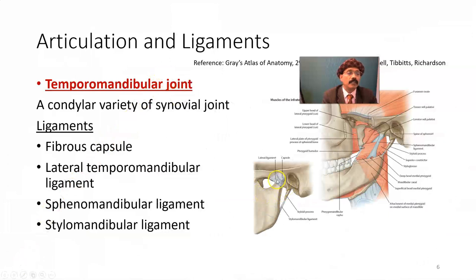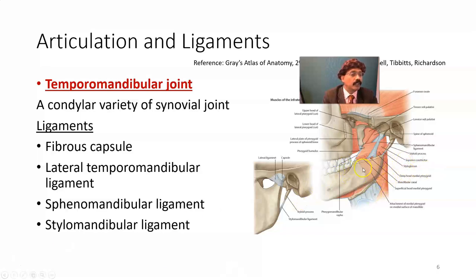Regarding ligaments, we have the lateral ligament, which is the fibrous capsule of the temporomandibular joint, and the sphenomandibular ligament, which attaches to the lingula around the mandibular foramen. The mandibular foramen contains the inferior alveolar nerve and inferior alveolar vessels. The mandibular canal contains the inferior alveolar nerve and inferior alveolar artery.